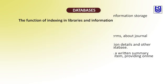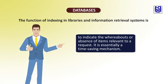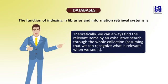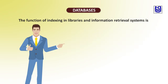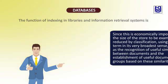Introduction. The function of indexing in libraries and information centers' retrieval systems is to indicate the whereabouts or absence of items relevant to a request. It is essentially a time-saving mechanism. Theoretically, we can always find the relevant items by an exhaustive search through the whole collection, assuming that we can recognize what is relevant when we see it. Since this is economically impossible, the size of the store to be examined is reduced by classification — recognizing similarities between documents and establishing useful document groups based on these similarities.